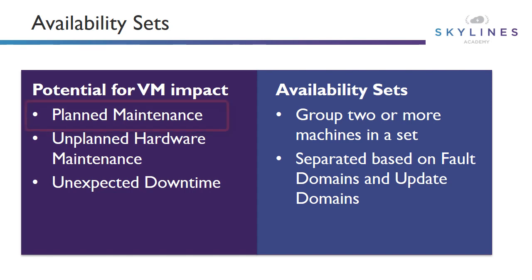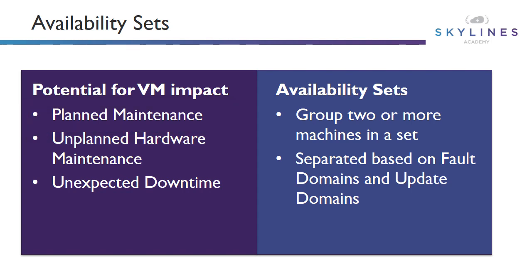First of all, we have planned maintenance. This is when Microsoft needs to patch or do some firmware upgrades on the underlying hardware that your VM is running on, and they need to evacuate your VM. In most cases, this will happen using their live migration technology — they will simply move your virtual machine from one host to another. But on other occasions, they do need to shut down your virtual machine in order to do this maintenance because live migration won't work, and so you need to account for that.